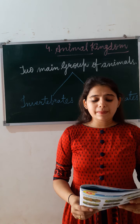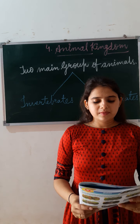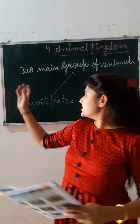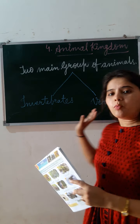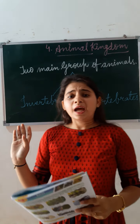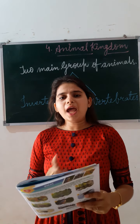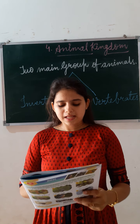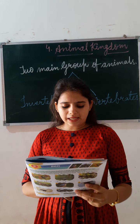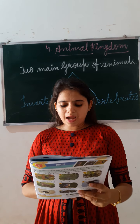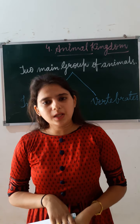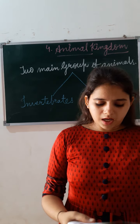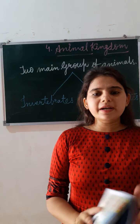Thodi si recap — Animal Kingdom mein aapko samajh mein aaya hoga ki do types ke animals hain: invertebrates and vertebrates. Invertebrates don't have a backbone, and those that have a backbone are called vertebrates. Understand? Now page number nine.